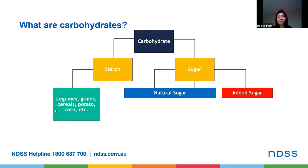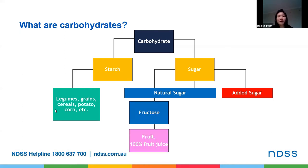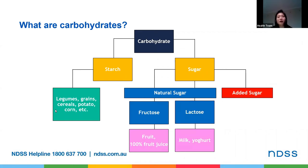Natural sugars generally come in two forms. We've got fructose, found in fruits and fruit juice. However, in fruit juice it is a concentrated form of natural sugar, so it isn't recommended to have it too regularly or in large amounts. We've also got lactose, found in your milk and yogurt. These are often associated with nutrients — for example, fruit with fibre, and milk with calcium. Even though they are natural sugars, they will still increase your blood glucose levels, but often at a slower rate than added sugars.